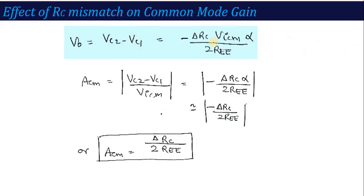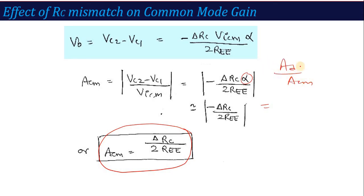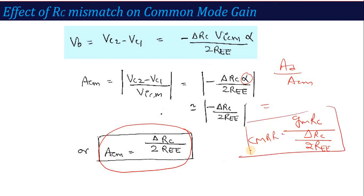So the common mode gain magnitude in the case of RC mismatch equals delta RC divided by 2REE. This is a finite value. So if we compute CMRR as AD divided by ACM: AD equals GM into RC, and ACM equals delta RC divided by 2REE. Dividing these gives the CMRR when there is a mismatch between the collector resistances RC.